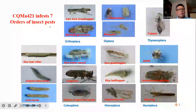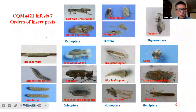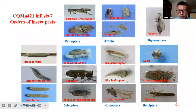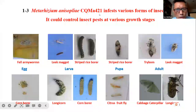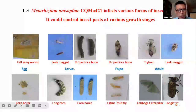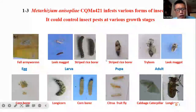These are some examples of insect pests infested by CQMA421 across all seven orders. Various life stages of insect pests can be affected, including eggs, larvae, pupae, and adults. So it can control insect pests in various growth stages — most effectively for the larvae and eggs.